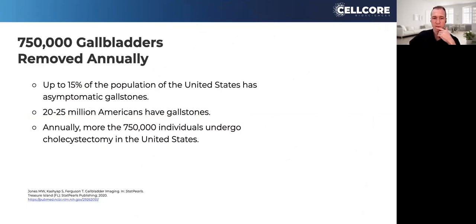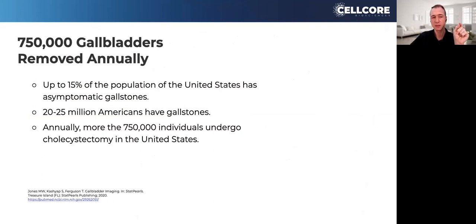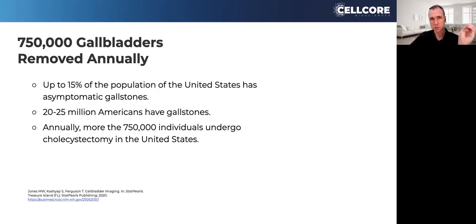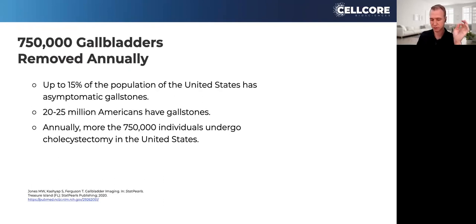Gallbladders — the surgical name for removal is cholecystectomy. On average, there are about three-quarters of a million individuals per year getting a gallbladder out. Up to 15% of the US population has asymptomatic gallstones, meaning you have no idea there are gallstones in the bile. Gallstones happen when there's a lack of flow, a lack of movement. Twenty to 25 million Americans have gallstones.